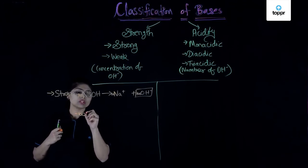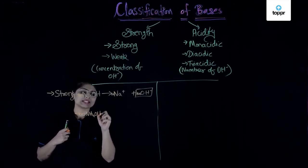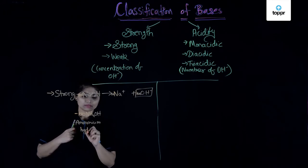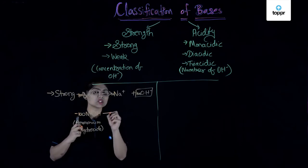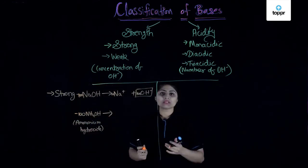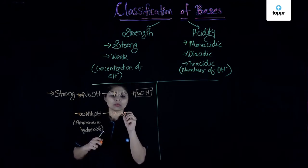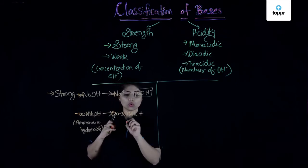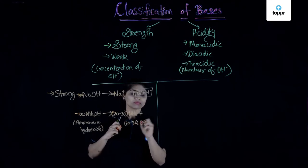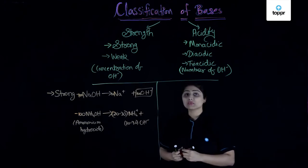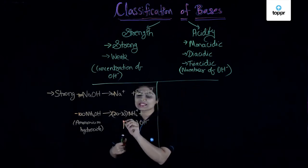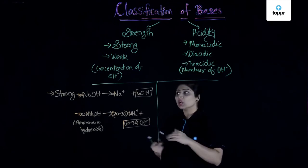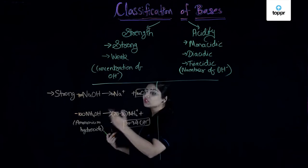Now suppose we have 100 molecules of NH4OH, that is ammonium hydroxide. Not all 100 will split — only some of them, about 20 to 30, will split. If 20 to 30 split, that means we will have 20 to 30 NH4+ and 20 to 30 OH-. So in this solution we get a lesser amount of OH-. The concentration of OH- in the first case is more, whereas in the second case it is less, though we are taking 100 molecules of each.